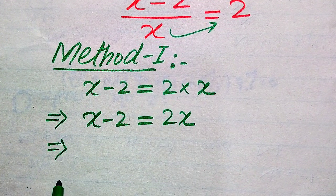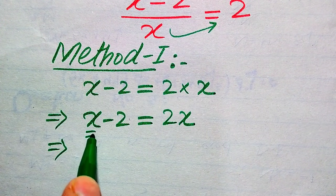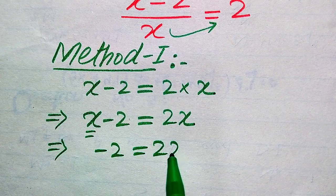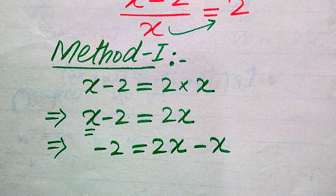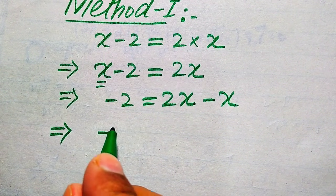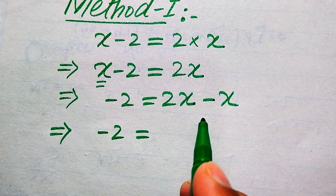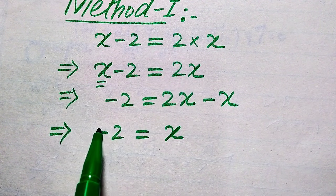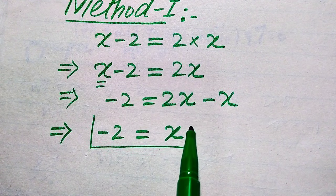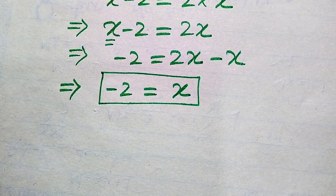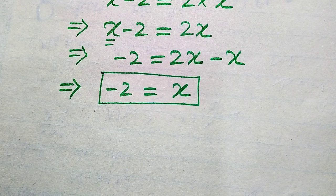In the next step, we move all variable terms to the right-hand side. The X on the left-hand side is positive; when moved to the right-hand side it becomes negative, giving us minus 2 equals 2X minus X. Subtracting these like terms gives us minus 2 equals X. So in the first method we get one root: X equals minus 2.